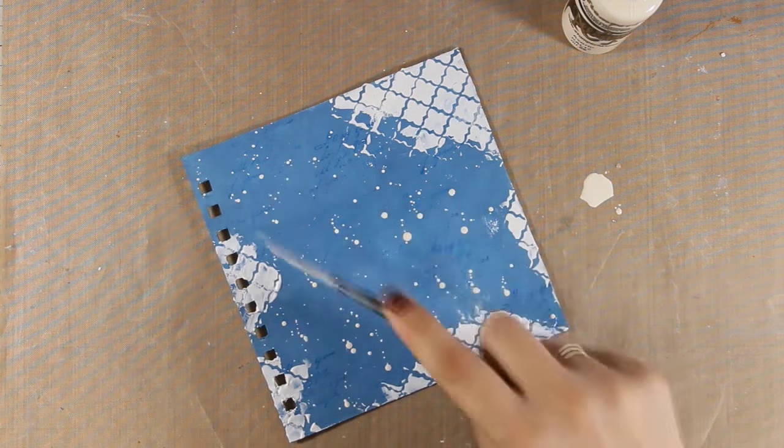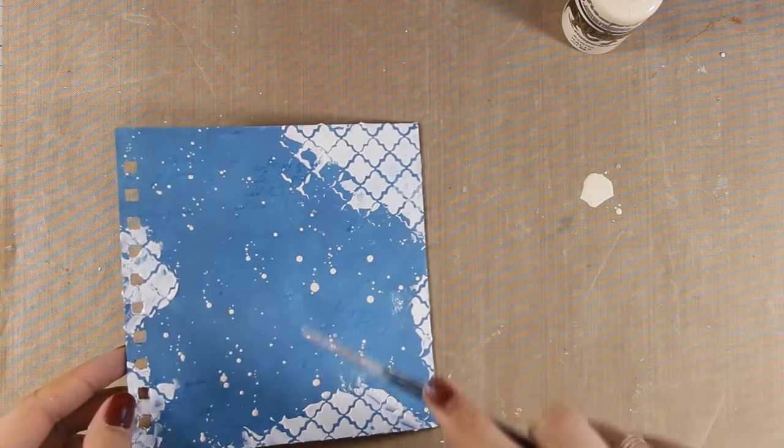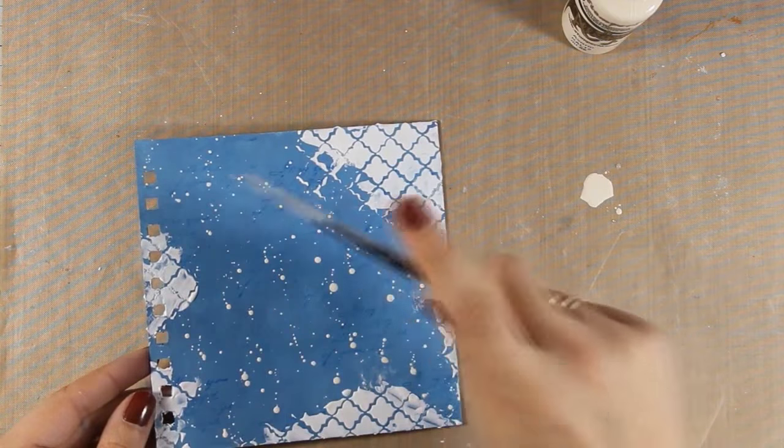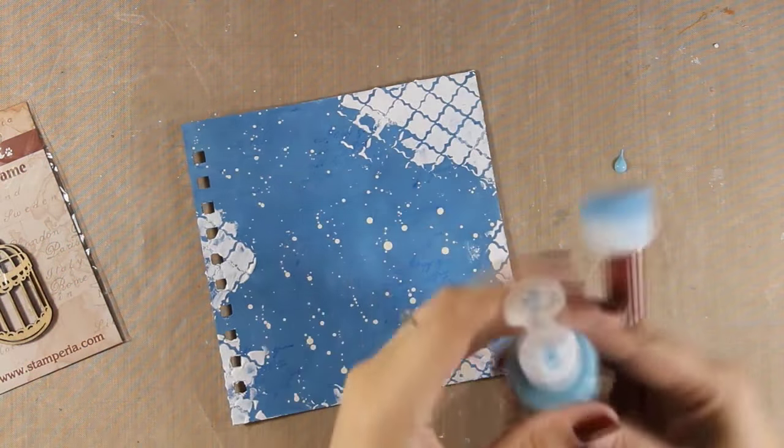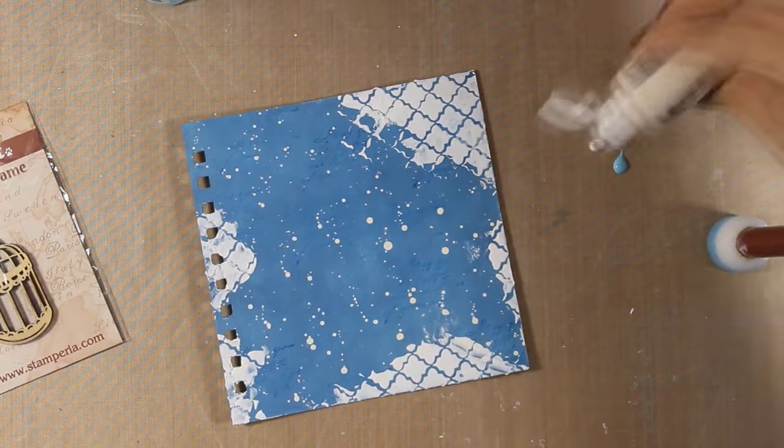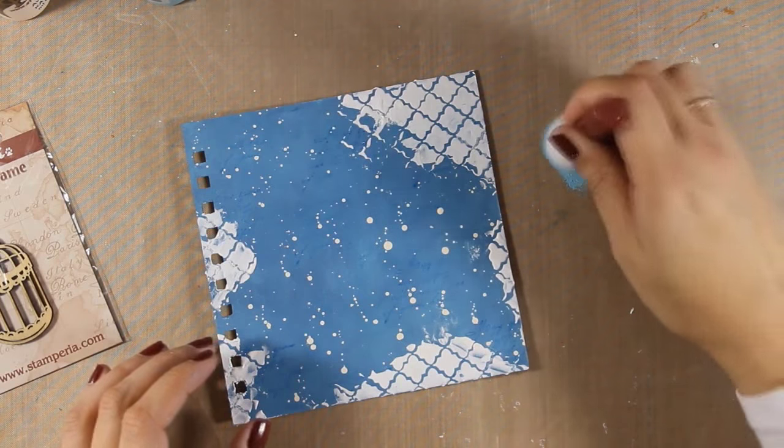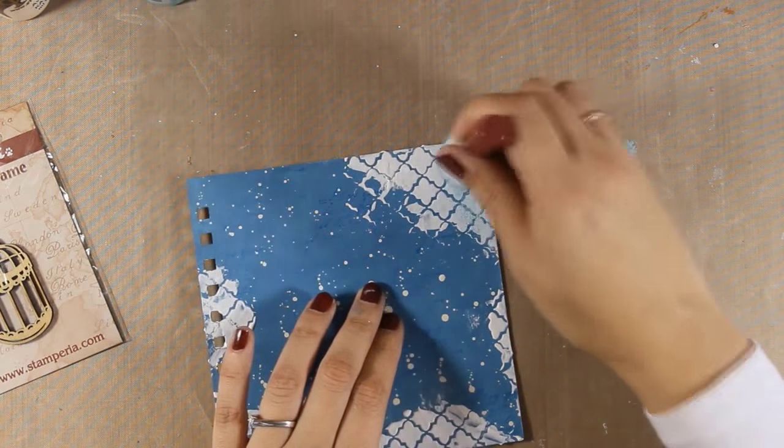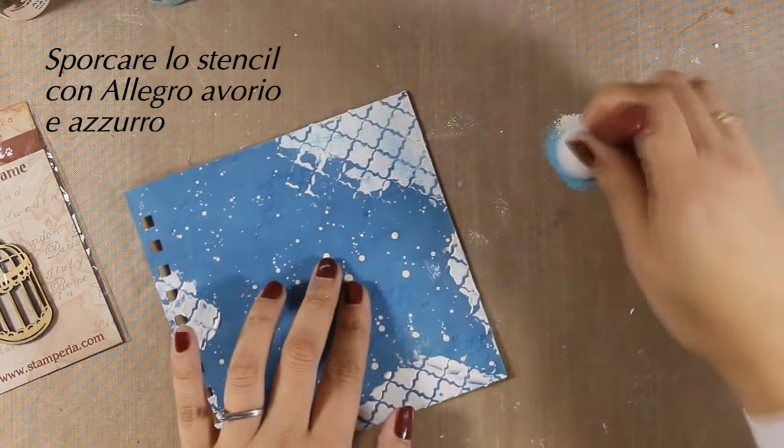And this is where I decided that the white modeling paste on the edges was too bright for what I was going for, so I am going to make it less bright by adding a mix of the ivory acrylic paint along with the light blue that I was using for my background. I am mixing them up on my sponge and I will lightly go over it. I am not going to cover up the whole white, I just want to tone it down.